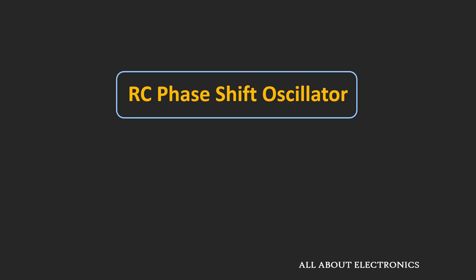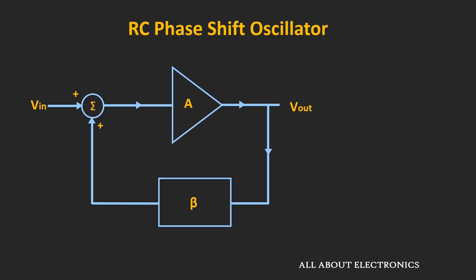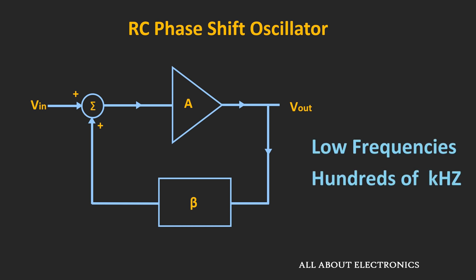Welcome to the YouTube channel All About Electronics. In the previous video on oscillators, we understood the working principle of the oscillator and the different types of oscillators based on feedback. One such oscillator is the RC phase shift oscillator, where the RC circuit is used in the feedback path. This oscillator generates stable sine waves and is used in low frequency generation, typically in the range of audio frequencies.